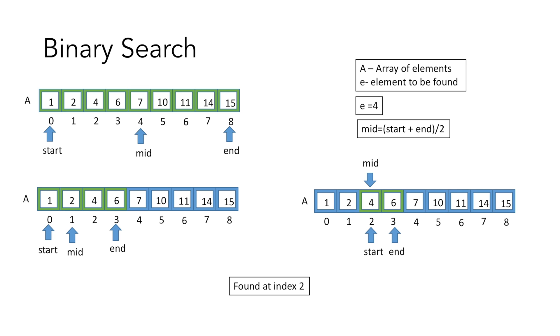Now if we look closely, to find the element 4 we divided the array into two parts at every step, and it took us 3 steps to find element 4. So now let's see how we can improve this using interpolation search.